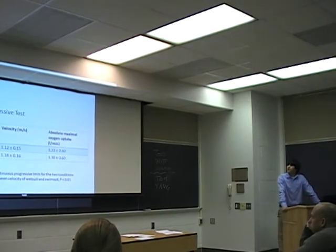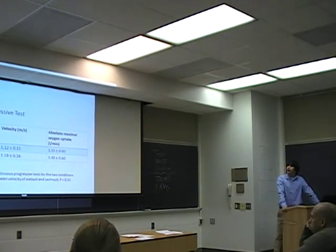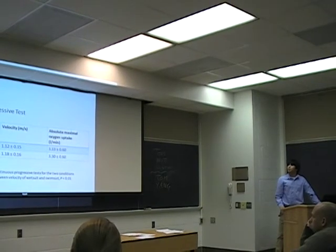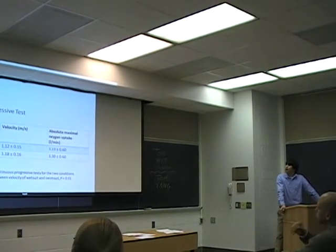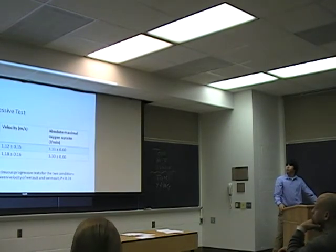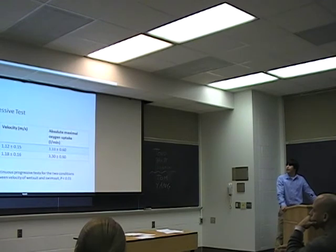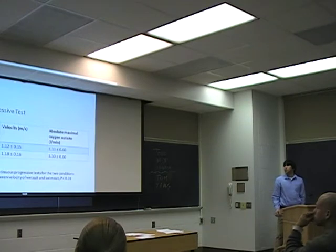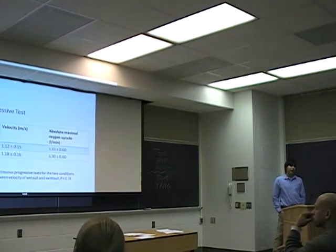Here we have the results from the continuous progressive test. You have your suit condition on the left, average velocity in meters per second in the middle, and the absolute maximum oxygen uptake on the far right. As you can see here, the average velocity while wearing a wetsuit was 1.8 meters per second compared to the swimsuit average velocity of 1.12 meters per second. And what you should notice on the right is they have approximately similar maximal oxygen uptake. And a paired t-test was used to compare the resultant velocities with a p-value of 0.01.